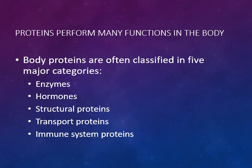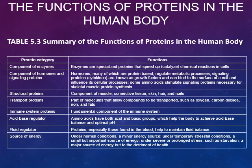The body proteins are often categorized into five major categories: enzymes or components of enzymes, hormones that function as signalers, structural proteins like fingernails and bones, transport proteins including LDLs or low-density lipoproteins, and proteins that function as gateways within cell membranes. Our immune system proteins are needed to fight disease. A summary of the functions of proteins in the human body is included in your chapter and within this lecture.